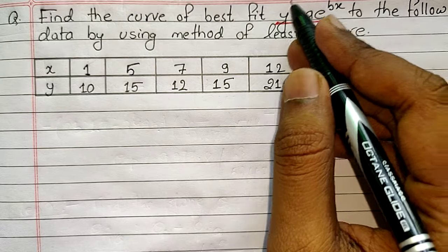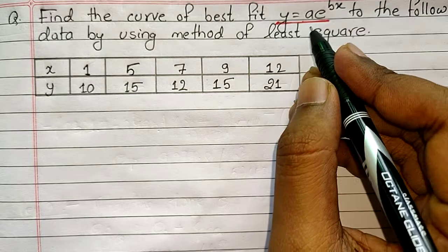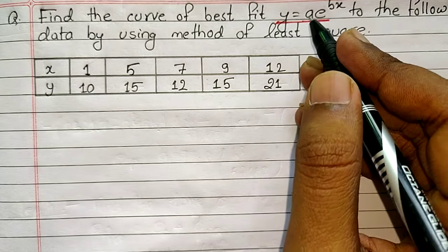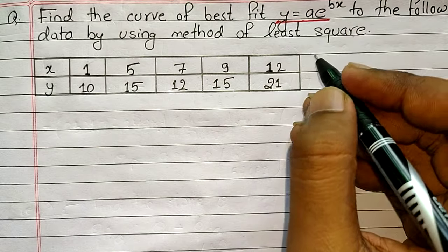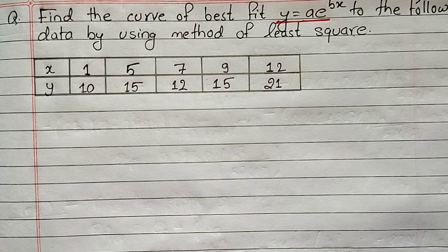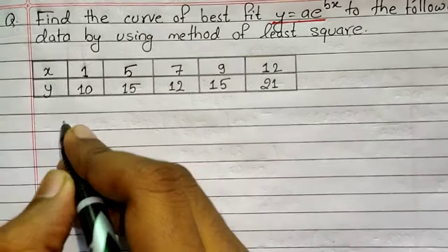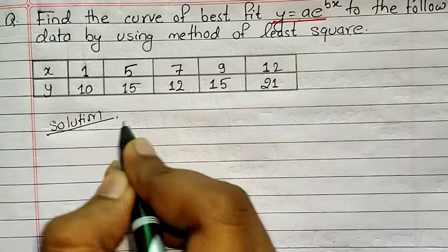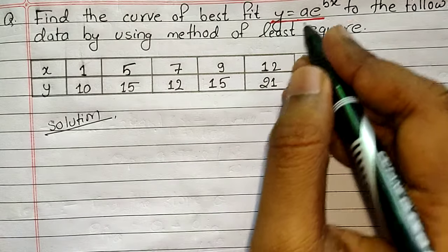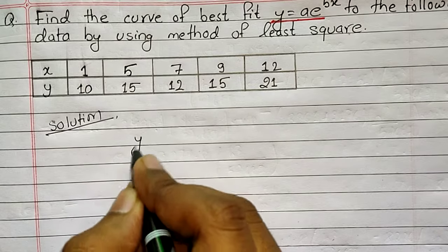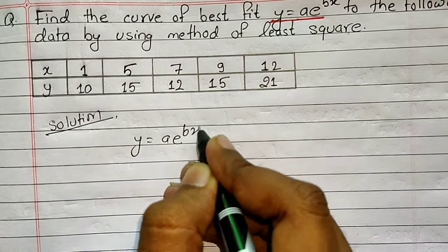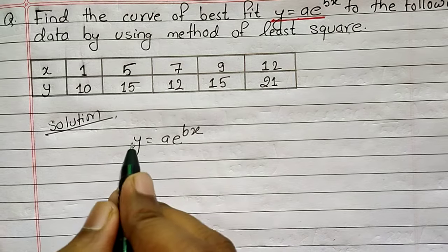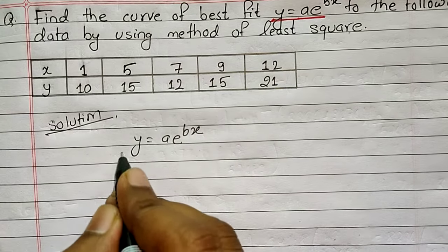The solution of this type of equation is going to be a little bit different from the equations mentioned at the beginning. So for the solution, let's write down the equation: y = ae^(bx). When the equation contains an exponential term, in such a case we need to take log on both sides of the equation.